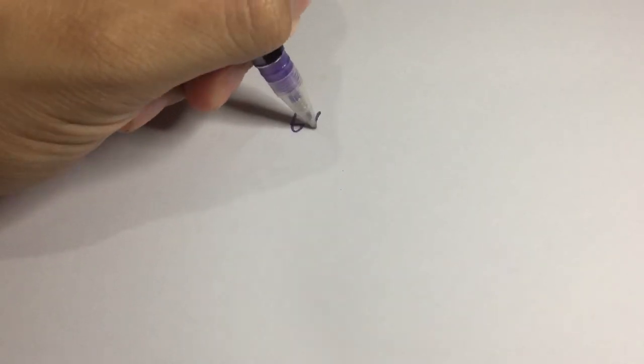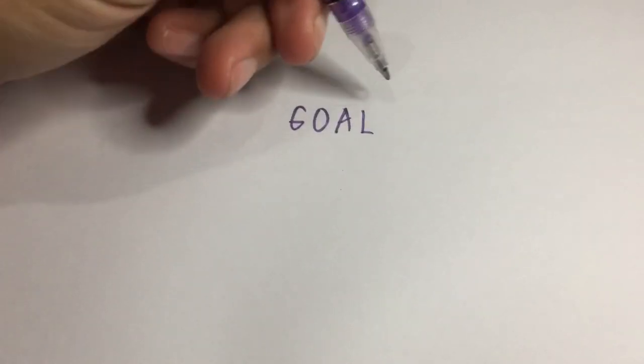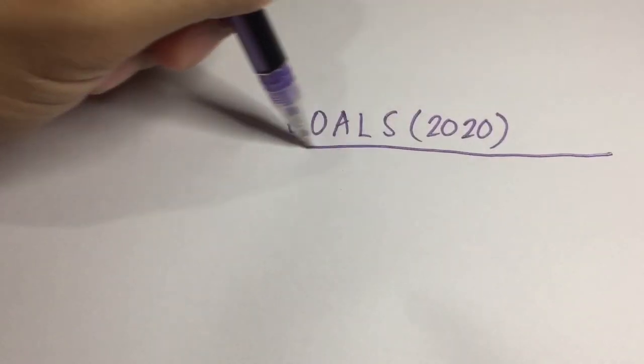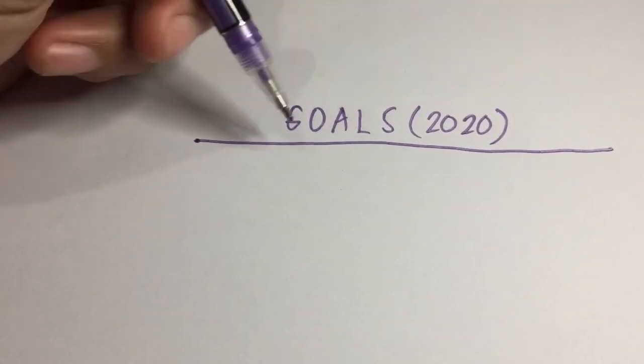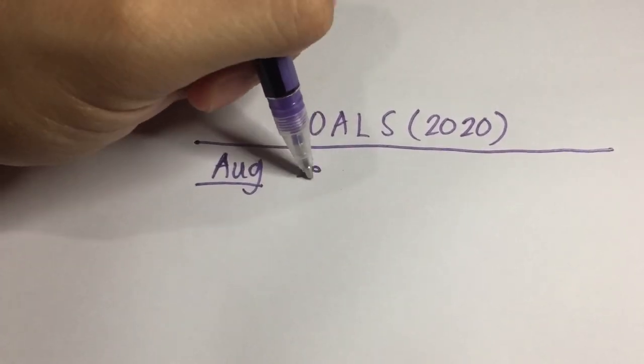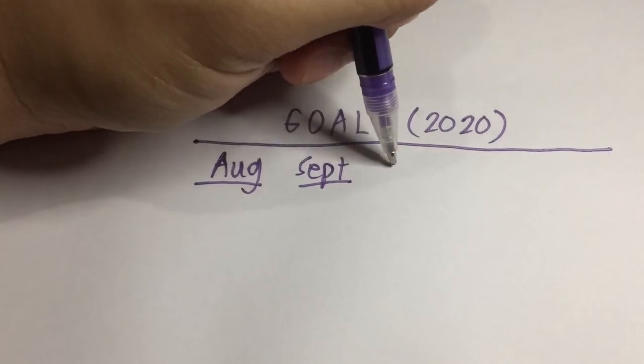Keeping in mind my long-term goal of 126 pounds and a BMI of 21.6, I decided to break down the rest of 2020 so I could accomplish, or rather establish, short-term goals.